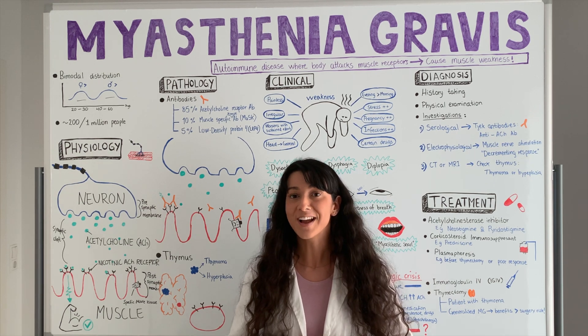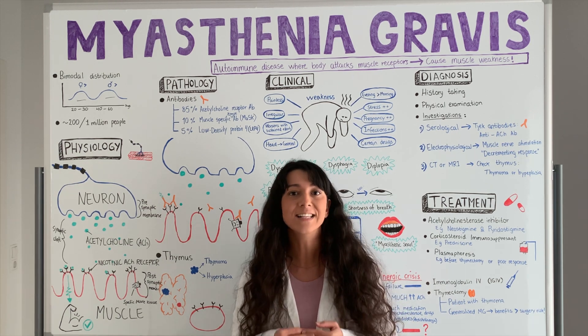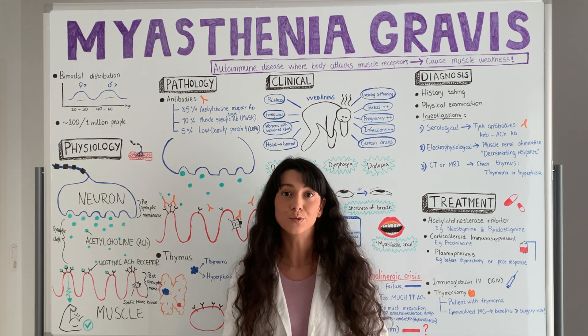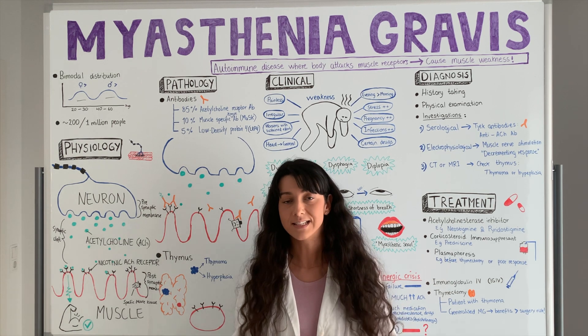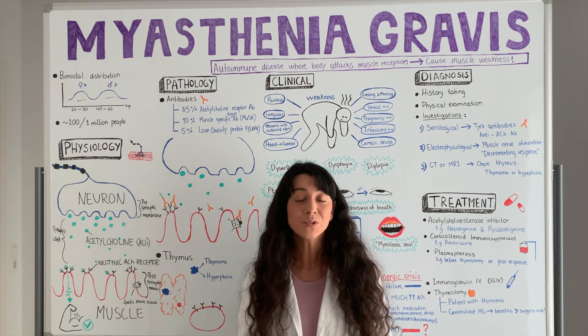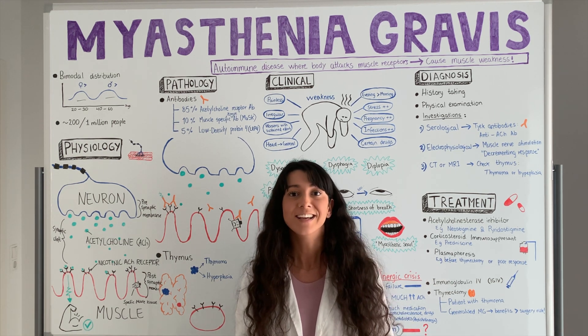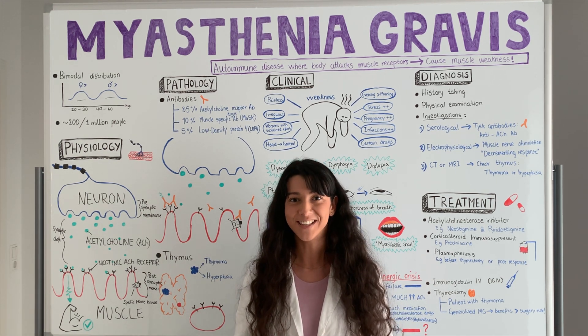That was how the neuromuscular junction should work and how muscle contraction occurs. Now it's time to look at where exactly it goes wrong in myasthenia gravis — if you're interested in that, keep watching the next video.